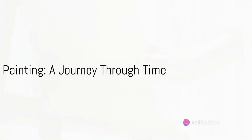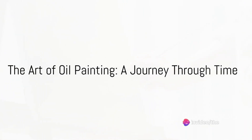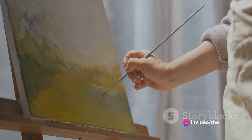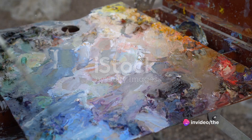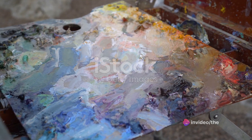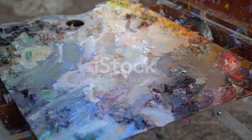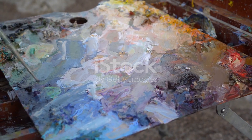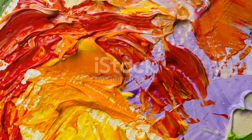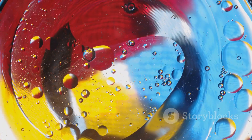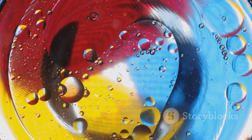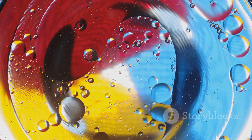Oil painting is one of the most traditional and widely practiced forms of painting art. It involves using pigments mixed with oil, typically linseed oil, as a binder. Oil paints offer rich colors, smooth blending, and the ability to create a wide range of textures and effects.